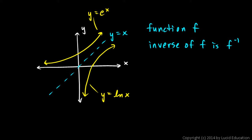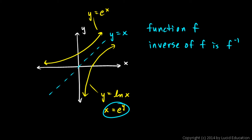y equals ln x is the same — mathematically equivalent — to saying x equals e to the y. So instead of y equals e to the x, we've switched the x and y, and now we have x equals e to the y, which is mathematically the same. Any point on this curve, if you take any point and reflect it across this line, you'll get to a corresponding point on the other curve. The entire curve is a reflection across the line y equals x of the other curve, and you get there by switching the x and y's. A function and its inverse will always be a reflection across that line.